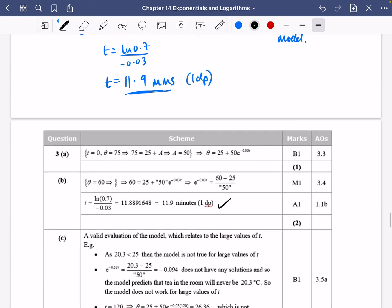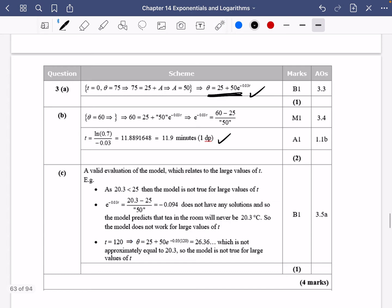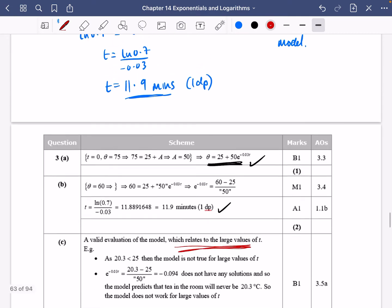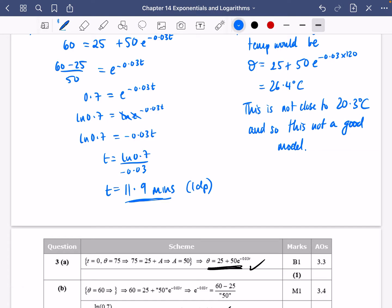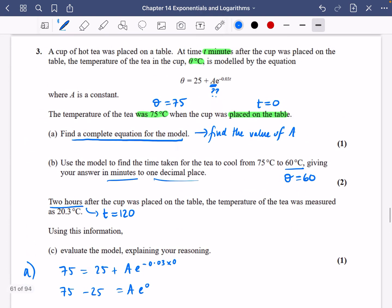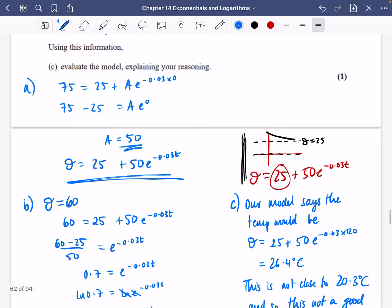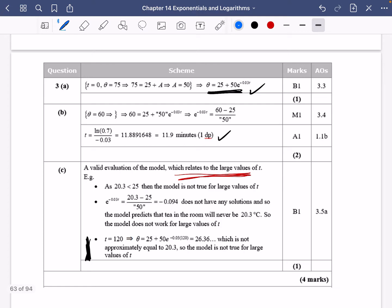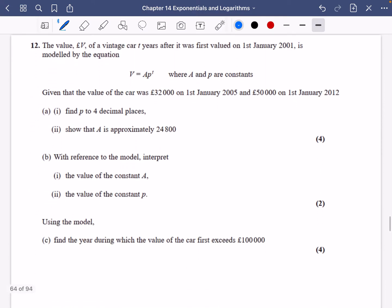So we got 11.9 minutes, we found A was 50, and you had to write the whole equation out. We said 26.4°C is not close to 20.3, so it's not true for large values of t. The mark scheme wanted you to say it relates to large values of t. I'm not sure that's obvious, but they wanted: this is not a good model for large values of t. I think I probably would have dropped that mark. Okay, we're going to try one more. Hopefully you've had a go at this already.